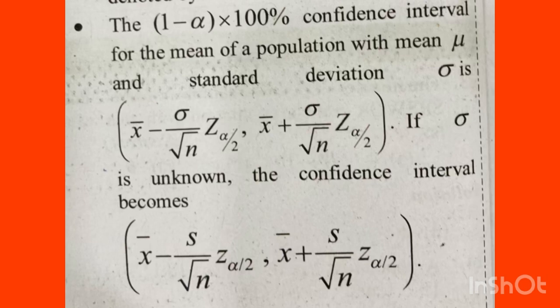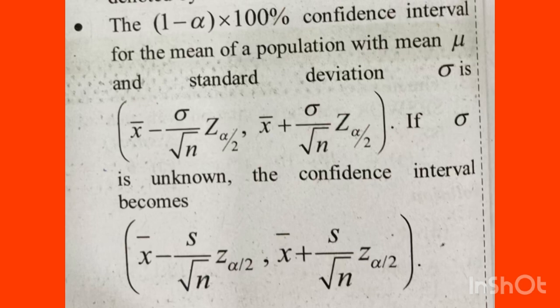The population mean is mu, the standard deviation is sigma. The confidence interval is: x-bar minus sigma divided by square root of n times z-alpha-by-2, to x-bar plus sigma divided by square root of n times z-alpha-by-2. If sigma is unknown, replace sigma with s. That is the 1 minus alpha, 100% confidence interval for the population mean.